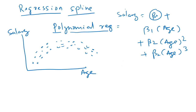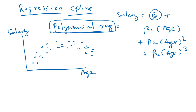This is one way of modeling a non-linear relationship. Polynomial regression is one way of doing that, but it has been seen that the performance of polynomial regression is not quite good, and it can be made better — and that's where regression splines come into the picture.